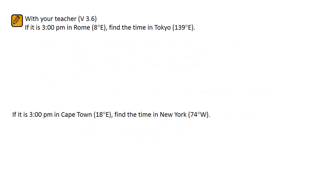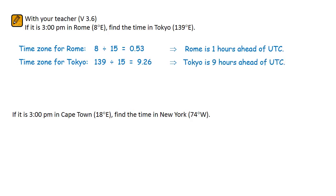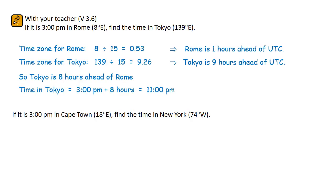To do questions like this one, the first step is to find the time zones for each location. Divide Rome's longitude by 15 and round to the nearest — we round down to 1, and because the longitude is to the east, Rome is 1 hour ahead of UTC. To find Tokyo's time zone, divide its longitude by 15 and round down to find that Tokyo is 9 hours ahead of UTC. This means Tokyo is 8 hours ahead of Rome, so the time in Tokyo will be 3pm plus 8 hours — that's 11pm.